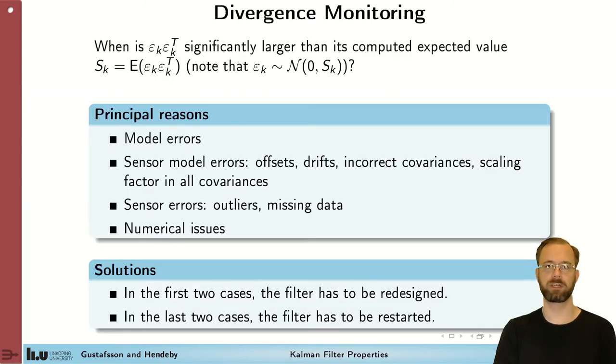Sometimes the filter stops working as expected. It diverges. We will study this by looking at innovations. If the innovations are not what they are expected to be, we have a problem.